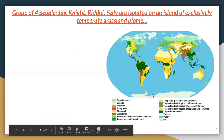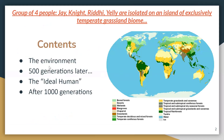So first we try to understand the environment of the temperate grasslands. Then we look at the people 500 generations later when they do not have any mutations. Then we look at the ideal human, and lastly, what would happen after 1,000 generations, even though mutations are occurring.